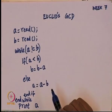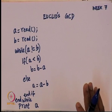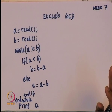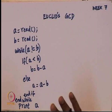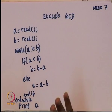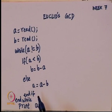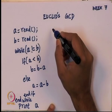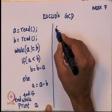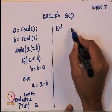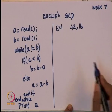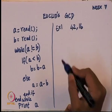Let me go over it again. You read the two numbers and if A and B are already the same, they are already the greatest common divisor of each other. For example, the GCD of 10 and 10 is 10. Otherwise you keep running the loop until A becomes equal to B. Let me do a few examples. I will take a small example first: let us find the GCD of 42 and 16, so A is initially 42 and B is initially 16.